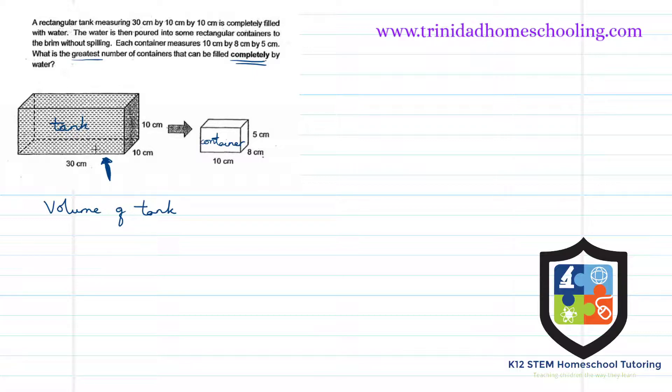This is a cuboid, and the volume of a cuboid is given by length times width times height. In any order - this could be length, this is width, and this is height. This gives us 30 multiplied by 10 multiplied by 10, which equals 3,000 centimeters cubed.